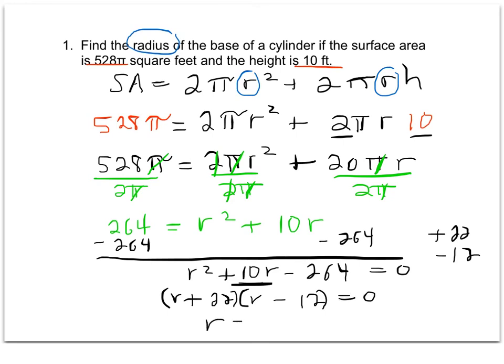To solve that then, r equals -22 or positive 12. The final step is to realize that what we're asked to find is the radius of the base of the cylinder. We can't have a negative distance, so we can't have a negative radius. And so my final answer is just going to be r = 12. The radius of the base of my cylinder is 12.